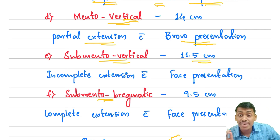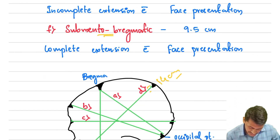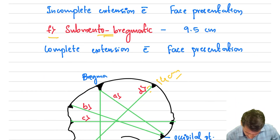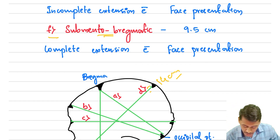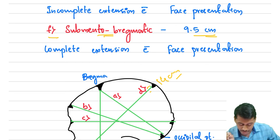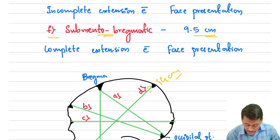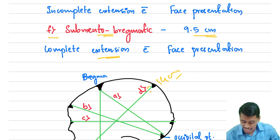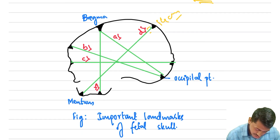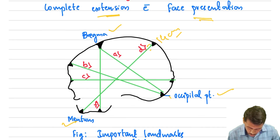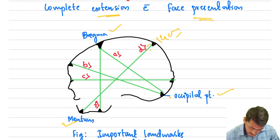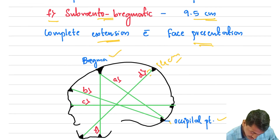Looking at the diagram: this is the bregma, this is the occipital point, and this is the mentum. The submentobregmatic diameter — shown in the diagram — measures up to 9.5 centimeters and occurs when there is complete extension of the fetal skull with face presentation. To summarize the antero-posterior diameters in order: suboccipitobregmatic, suboccipitofrontal, occipitofrontal, mento-vertical, and finally submentobregmatic.